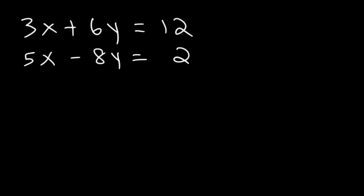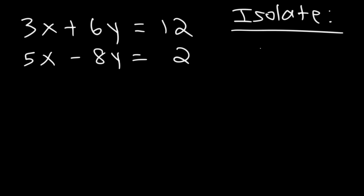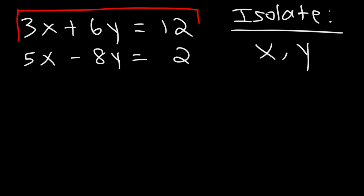The first thing we need to do is isolate one of the variables — basically, solve for it. It can be x or y, but we need to get one of them by itself. We can pick an equation; I'm going to pick the first one, because 3, 6, and 12 are all multiples of 3. That tells me the best variable to solve for is x.